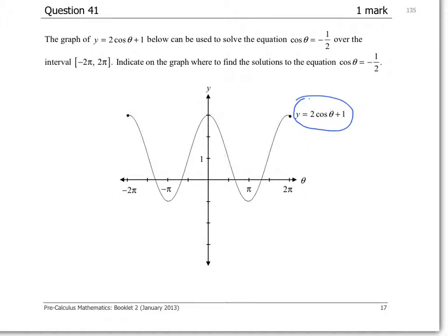So it looks like if we substitute in y equals 0, we will have 0 equals 2 cos theta plus 1. If we subtract 1 from both sides,